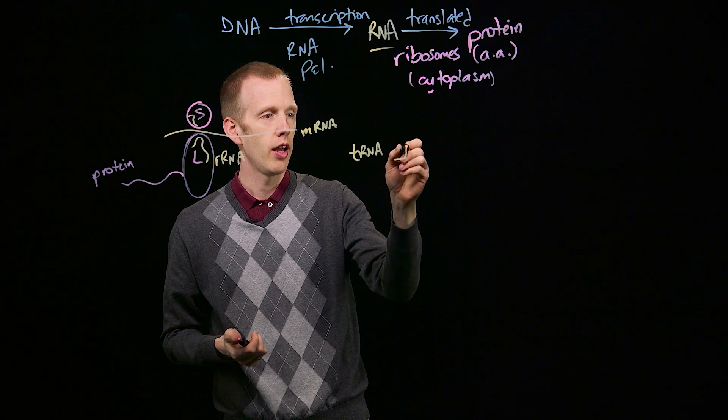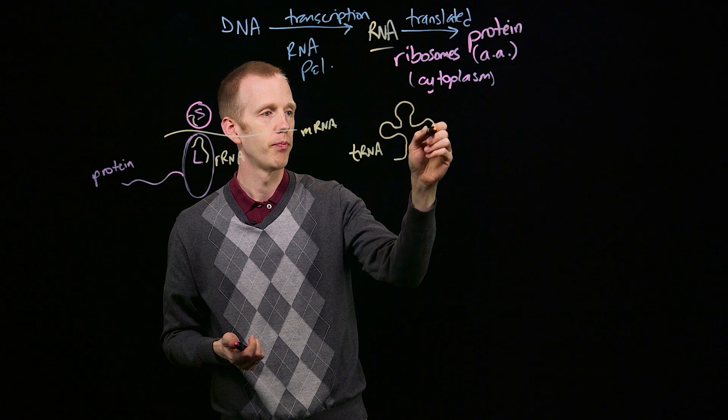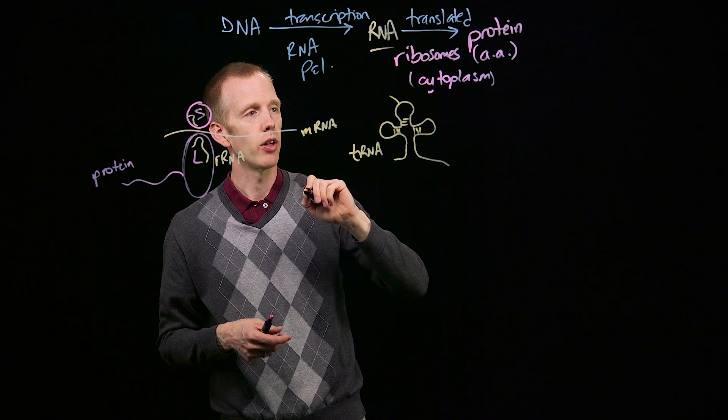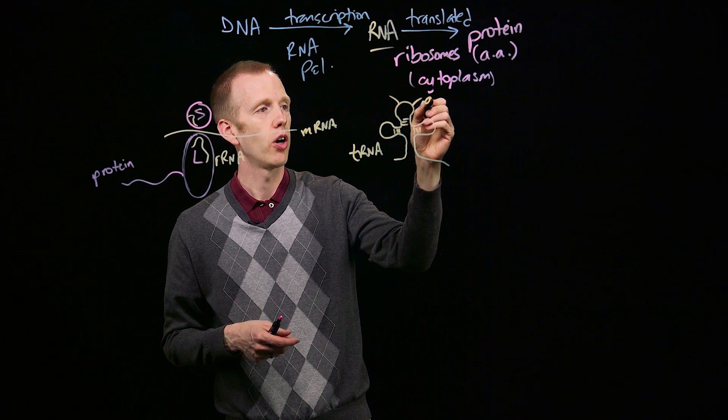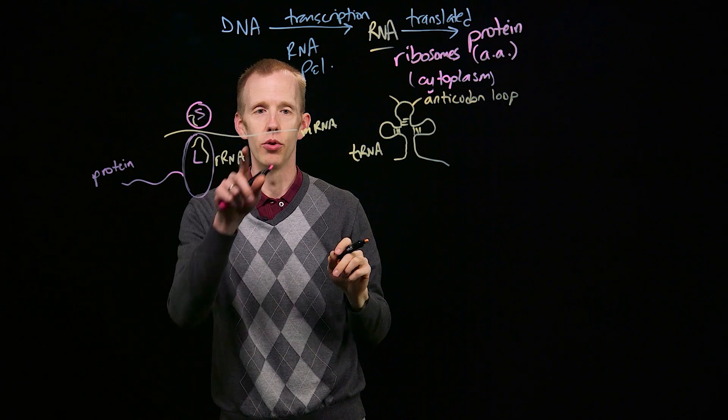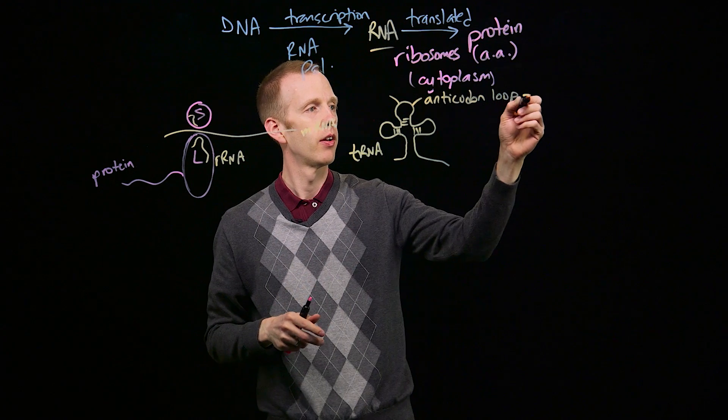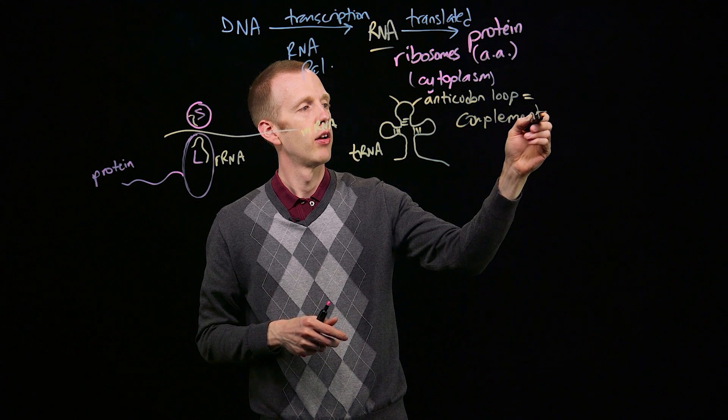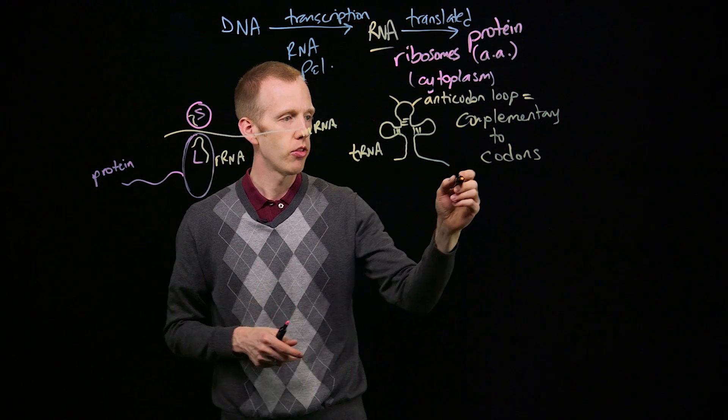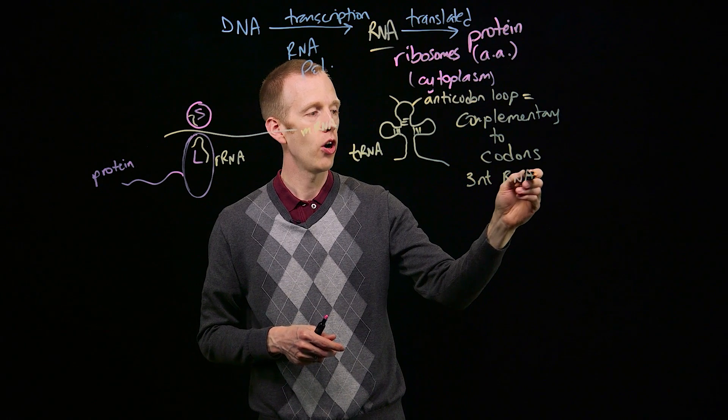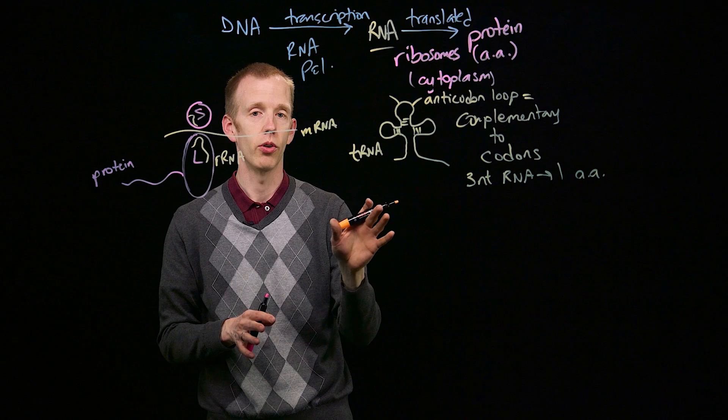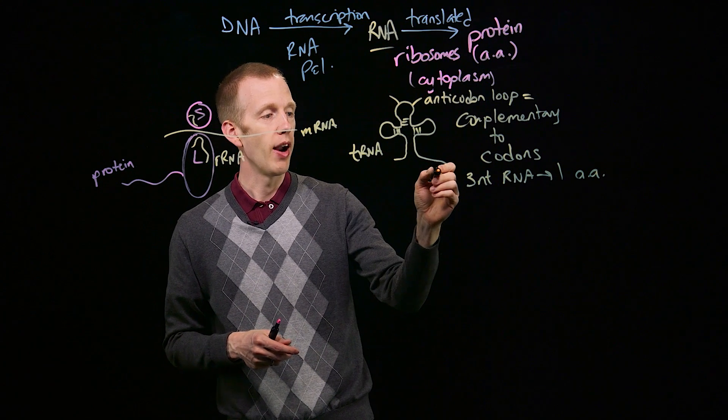Transfer RNA molecules have a particular structure called a cloverleaf structure, where there are three hairpins that form a cloverleaf. Each of these molecules contains, in one of those loops, what's called the anticodon loop, and that is complementary to three nucleotide units that are called codons. A codon is a set of three nucleotides of RNA that encode one amino acid. There is a different tRNA molecule, sometimes multiple tRNA molecules, for every amino acid.